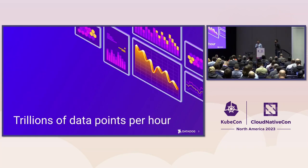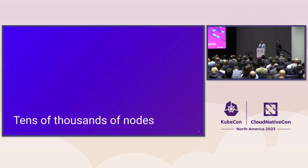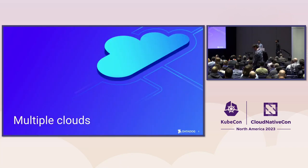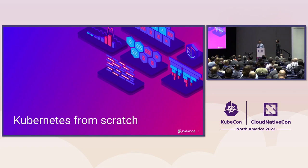Datadog is an observability company. Every hour we ingest trillions of data points from our customers, applications, and infrastructure. To process those data points, we run hundreds of thousands of Kubernetes pods on tens of thousands of nodes in many clusters. To meet our customers where they are, we run on multiple clouds. And to better control performance and reliability consistently across cloud providers, we run Kubernetes from scratch.